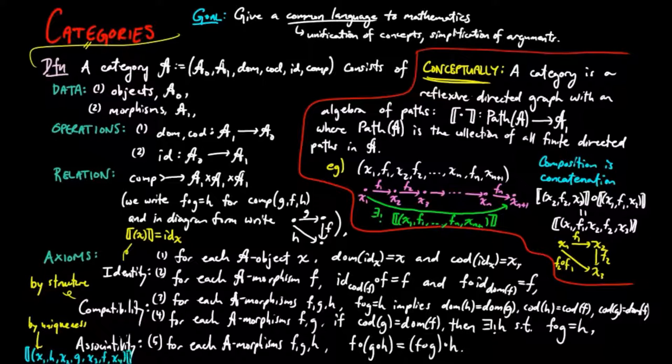And it is also easy to see that by finite induction that every category given here by the definition gives rise to reflexive directed graph with such an algebra of paths.